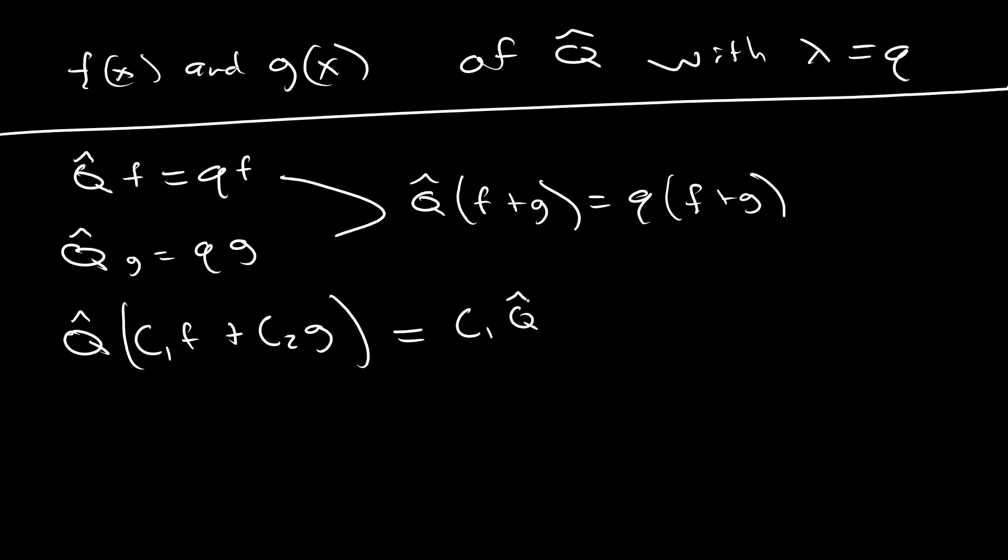When we do that, what we're going to get is c1 q hat f, because obviously our operator is not going to be applied to our constant, plus c2 q hat g. And from these right here, we know that those are equivalent to just the eigenvalue times that eigenfunctions. This is actually q c1 f plus q c2 g, which is just q times c1 f plus c2 g. And there you go. We've just shown that a generic linear combination of our eigenfunctions f and g are itself an eigenfunction of the q hat operator with the eigenvalue q.